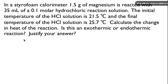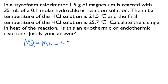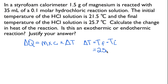First, we're going to calculate the change in energy of the water. We write the equation: delta Q equals M times C times delta T. The change in temperature is always the final temperature minus the initial temperature — you always do final minus initial so that you get the sign correct. So it's 25.7°C minus 21.5°C, and that equals 4.2°C.